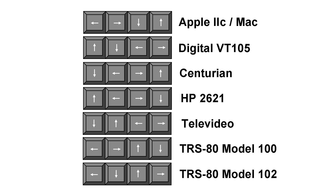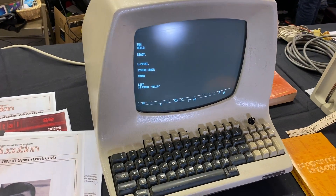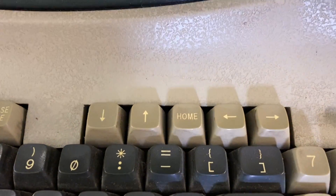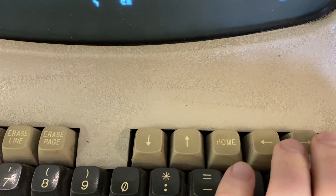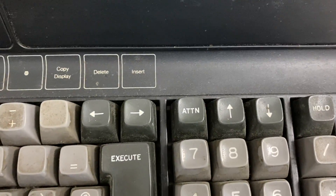It's almost like they were trying to make sure that every system used a different arrangement, so there's no way you'd ever be able to move from one system to another without visually looking at the cursor keys rather than being able to use them by touch alone. There are also some systems close to the inline 4 but slightly different, such as the ADM-3 terminal, which places the home key in the center. Also the IBM 5100 series did something similar, only it's the attention key.